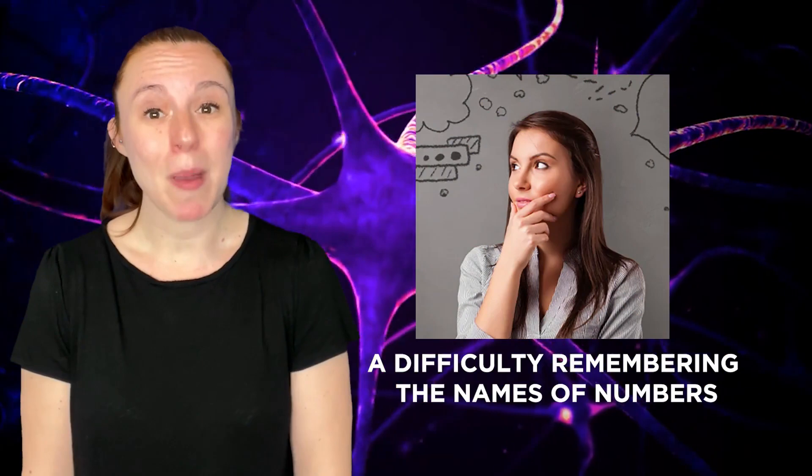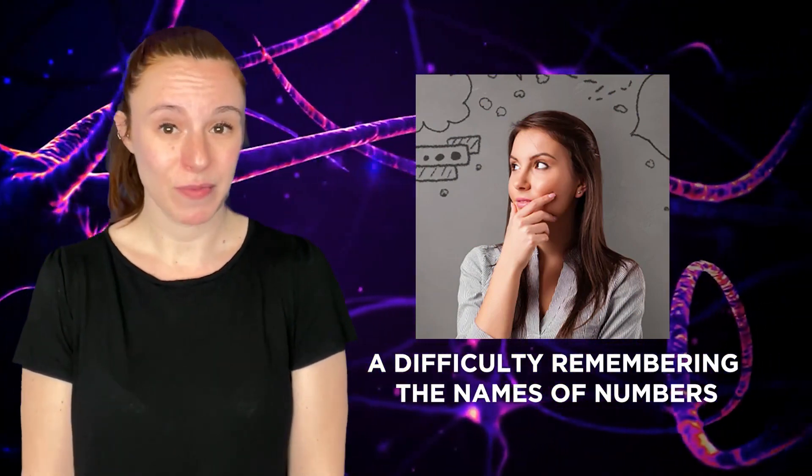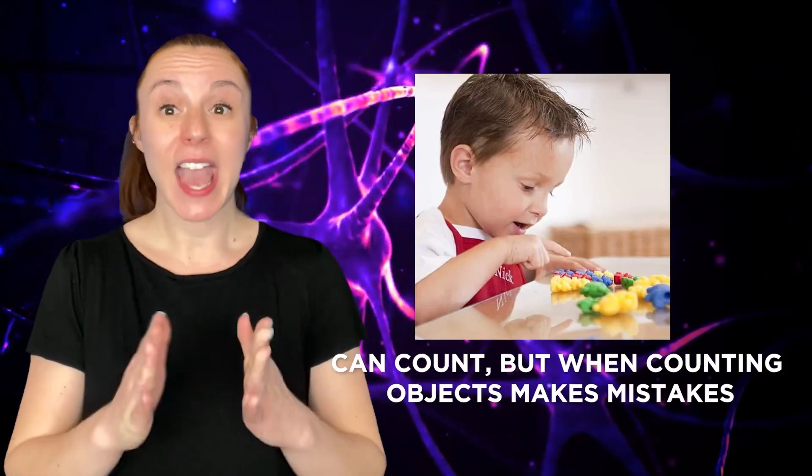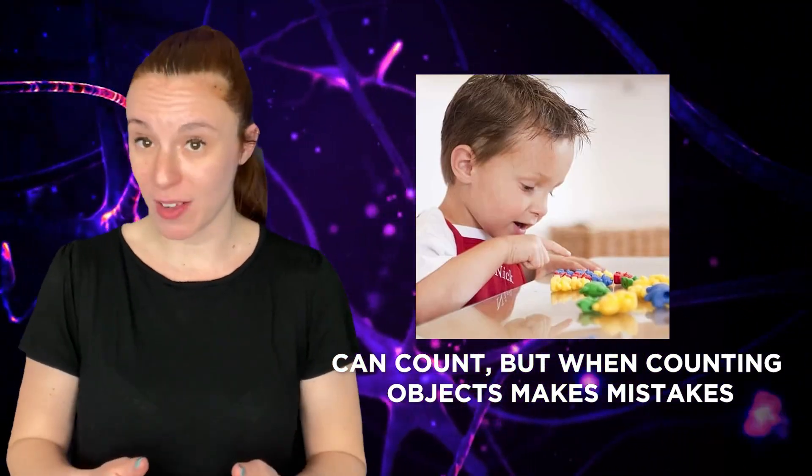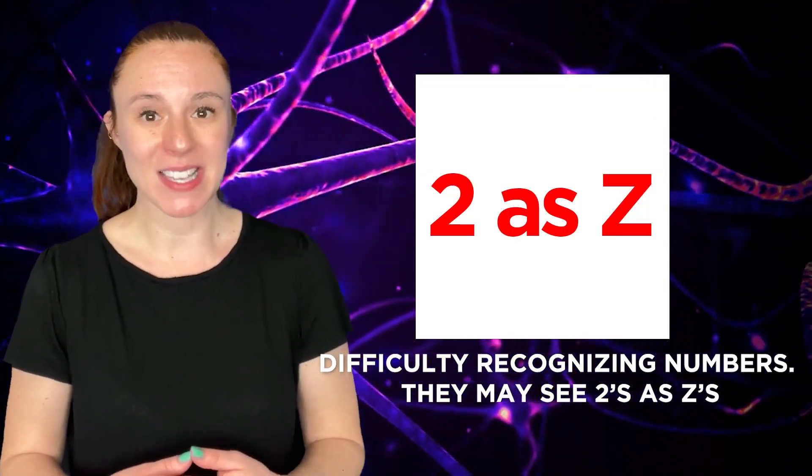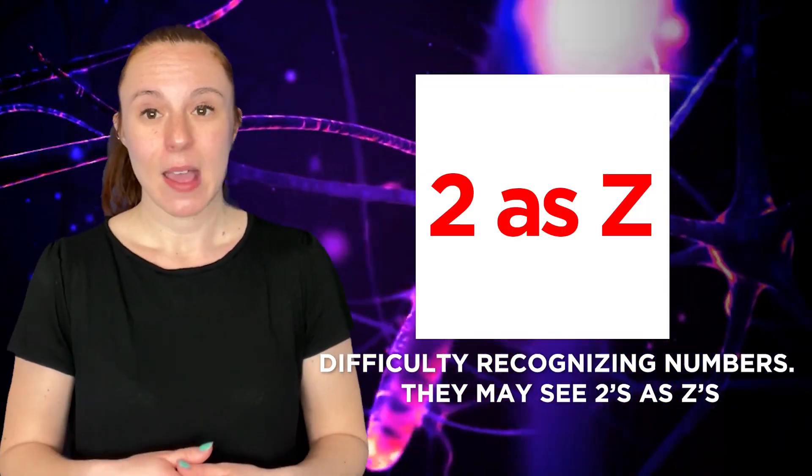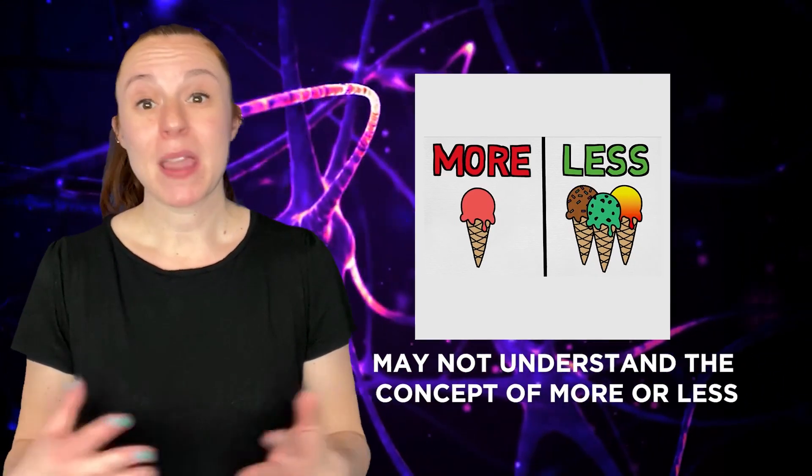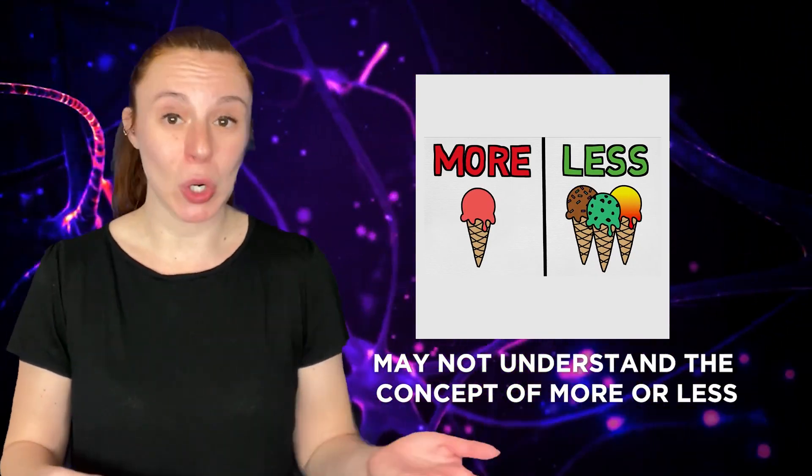A difficulty in remembering the names of numbers. Trouble learning to count. Trouble learning to count by twos or threes. Can count but when counting objects makes mistakes. Difficulty recognizing numbers. They may see twos and z's. May not understand that numbers stand for quantities. May not understand the concept of more or less.